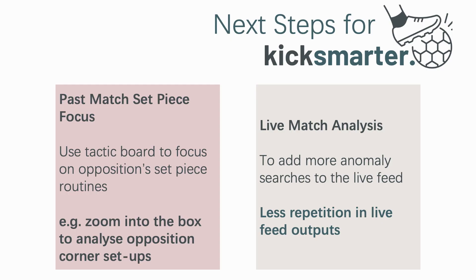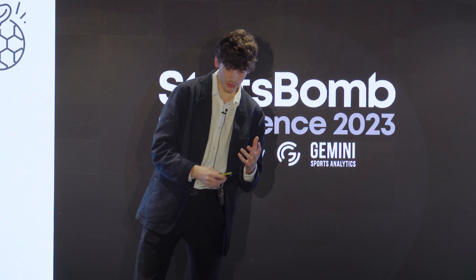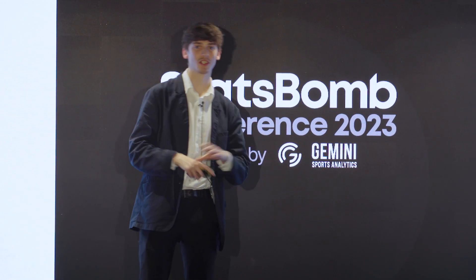Another future iteration would be to add more anomaly searches to the live match analysis. Our algorithm currently has about 20 different variables — but this was a hackathon that only took about a month, so in the future we'd look for more searches. I'd also want to get more coach feedback to understand what coaches want to look for in data that they might miss with the human eye. That's my talk — I'd really like to thank StatsBomb for this opportunity, and thank my team who were amazing throughout the whole process. I'd appreciate any feedback or questions.